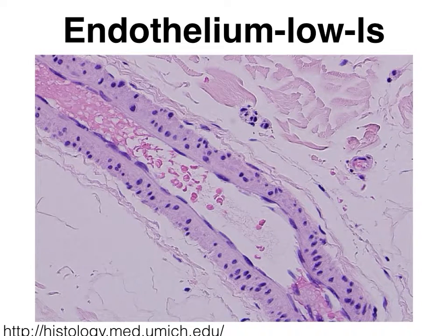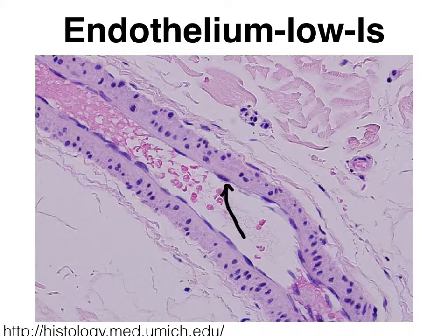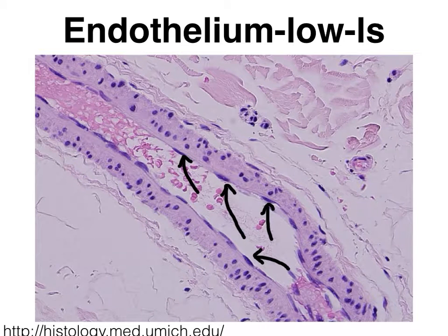Here then, we see a longitudinal view of a blood vessel. We call it a longitudinal view because we can see the length of our blood vessel, the length of our tube. Notice the little red blood cells in the lumen of our blood vessel. And this time, we very nicely see the flattened nuclei of our simple squamous epithelial tissue, which we refer to in the blood vessels, where it forms the lining of the blood vessels to form a very slick surface, as the endothelium.